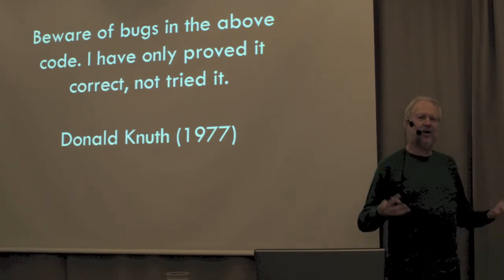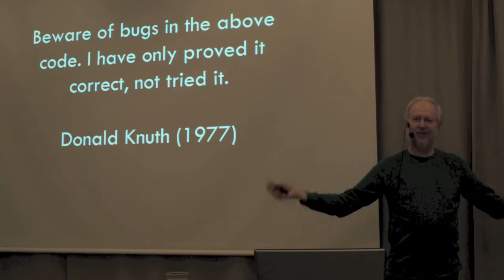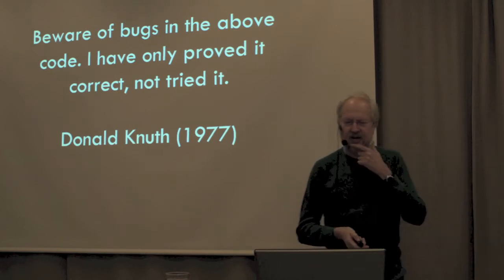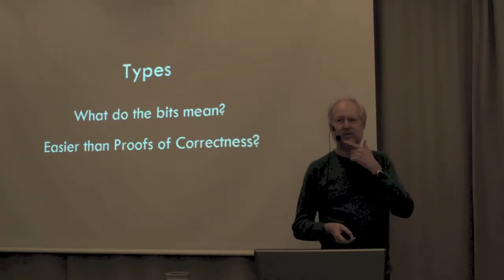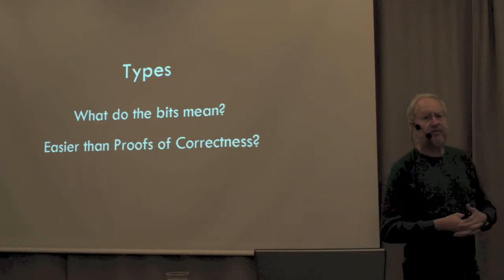When proofs of correctness failed, there was despair. How do we go on? We can't write programs with just tests. Too much is depending on this. So there was an idea that maybe we could use types. Maybe types are the answer. Maybe types can do what proofs couldn't do.